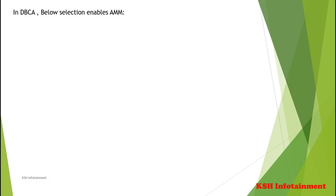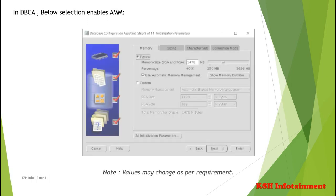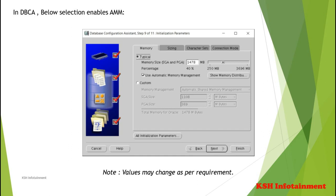Oracle Database tunes to the target memory size, redistributing memory as needed between the SGA and the Instance PGA. If you create a database with DBCA and choose the Basic Installation option, Oracle Database enables Automatic Memory Management by default. In DBCA, selecting the 'Typical' option in the memory tab and providing a memory size value will treat it as the maximum memory target for Automatic Memory Management.